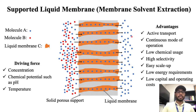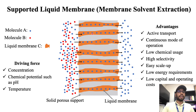The advantages of supported liquid membrane are: it is an active separation process which works in a continuous mode of operation; it requires low chemicals, since only a small amount of liquid is embedded into the support but it works continuously; and as a result, it requires low capital and operating cost, and it is an energy-efficient process.